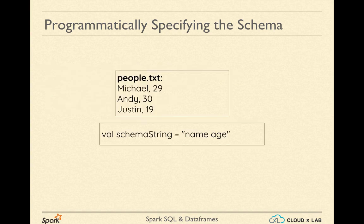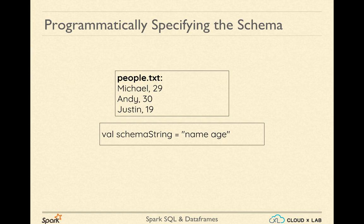Let us take a look at programmatically specifying the schema. Say we have a file people.txt having comma-separated data, and we are provided with schema details dynamically during runtime in a string with the name schema string. The schema string would have the names of columns separated by spaces. Right now it has two column names — name and age — but in future it could have more or fewer columns.